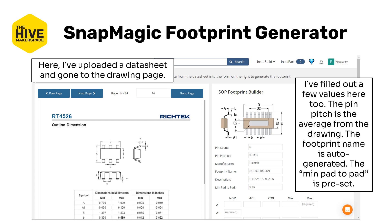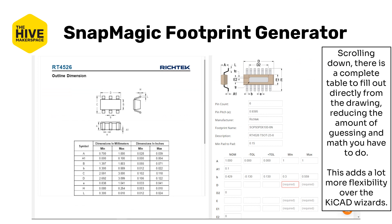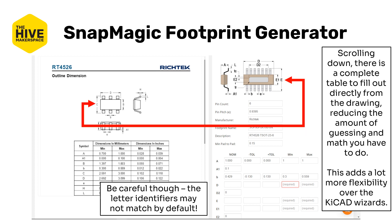I've uploaded the datasheet and moved to page 14, which gives all the values, and I've filled in some of them on the right. The pin pitch is an average from the drawing, which I think is probably safe. The footprint name is auto-generated and the min pad-to-pad is preset — that means the minimum spacing pad to pad before things complain, but I just leave it as the default. Scrolling down on the right-hand side there's a table we can fill out directly from the mechanical drawing in the datasheet, which reduces guessing and math.